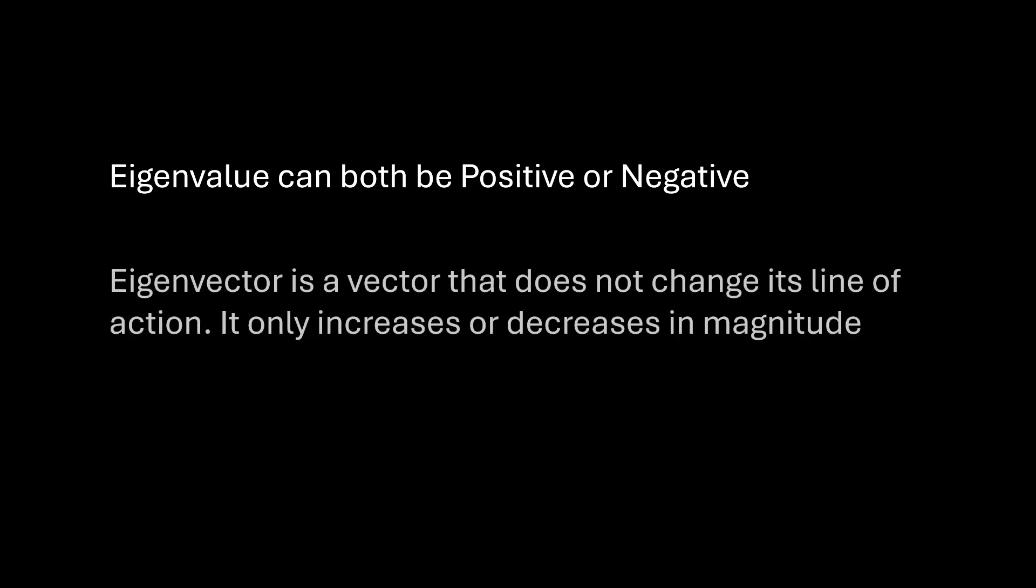So eigenvalue can both be positive or negative. And negative eigenvalue will flip the direction along with scaling the eigenvector. And we already know that an eigenvector is a vector that does not change its line of action. It only increases or decreases in magnitude.